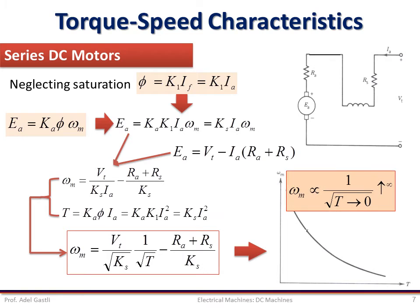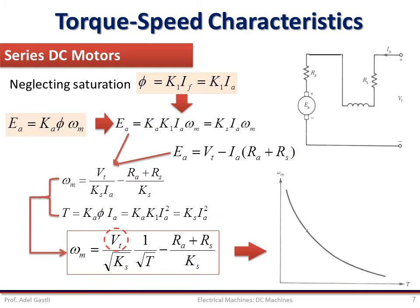This behavior makes the series motor suitable for drilling and traction applications. Importantly, the series motor should not be operated at no load — if the torque is zero, the speed tends to increase excessively above its rated value, which can be very dangerous. Speed control can be performed by varying the armature terminal voltage or armature resistance; however, voltage control using power electronics converters is more practical and efficient. There should always be a minimum load on the DC series motor shaft.